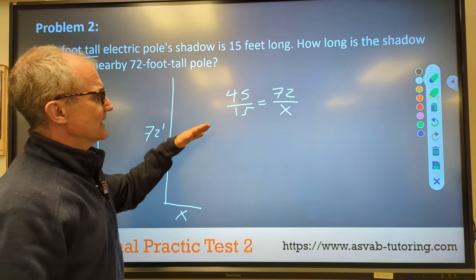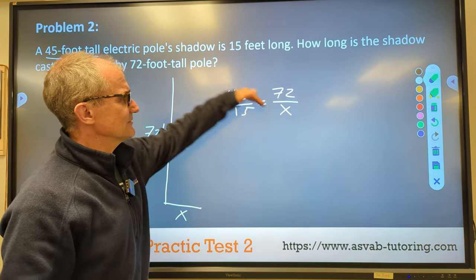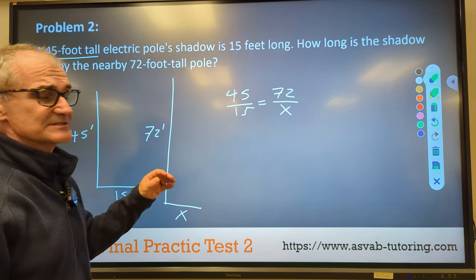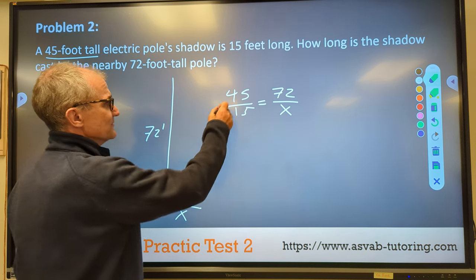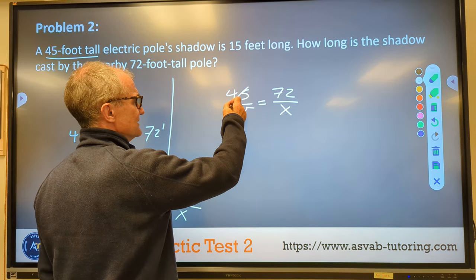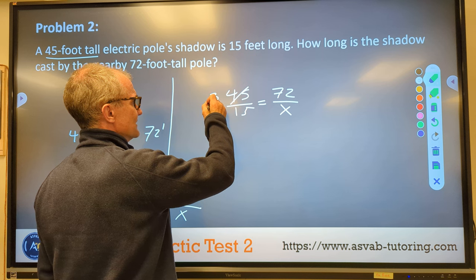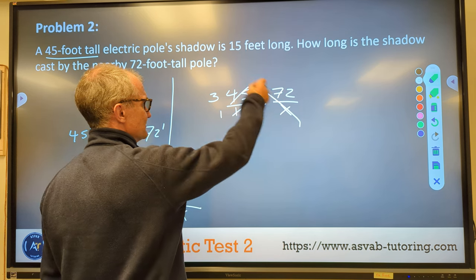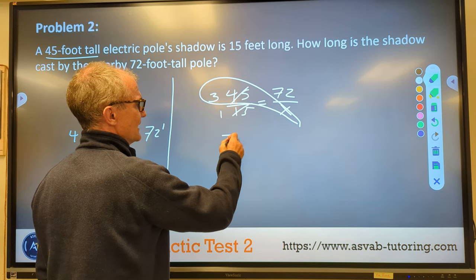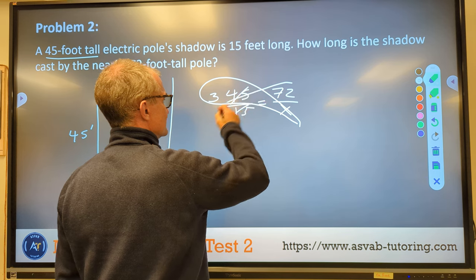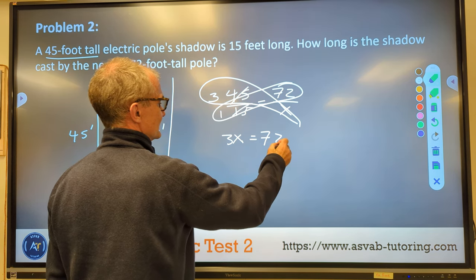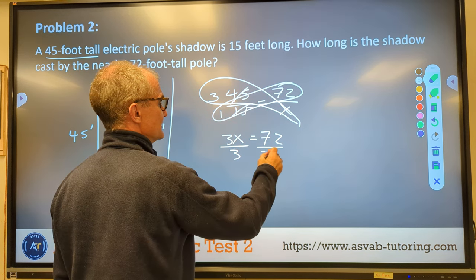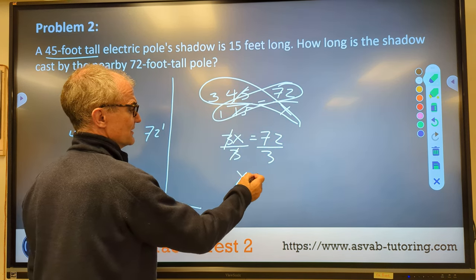I could cross multiply right now, but I think I'm going to reduce my fraction first because it's a no calculator test. So 45 is divisible by 15. 15 will go in here three times, 15 will go in here once. Now when I cross multiply, it's going to be a lot easier. 3x is equal to 72 times one. Getting x by itself, I have to divide both sides by three. These threes cancel, it gives me x by itself.